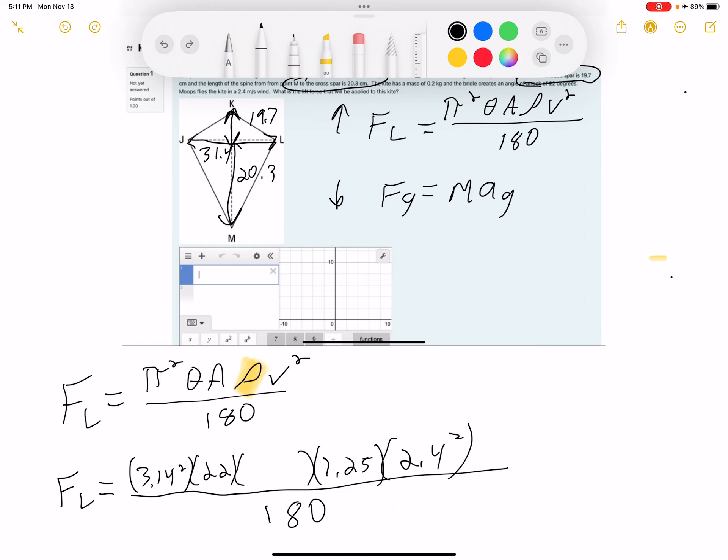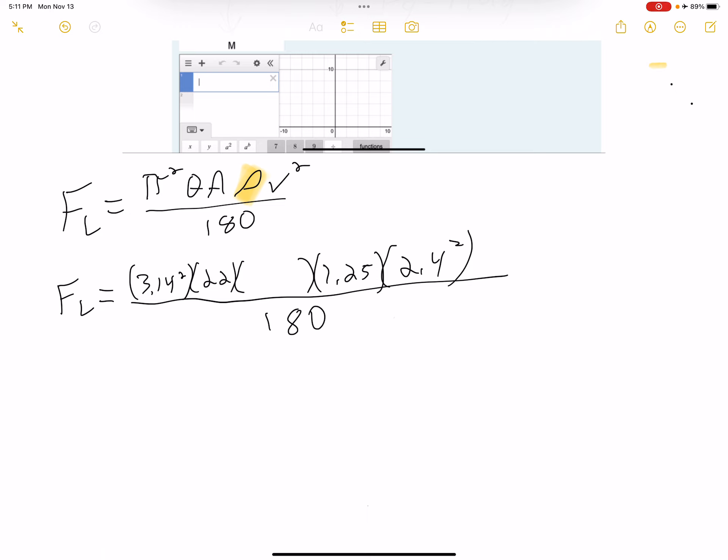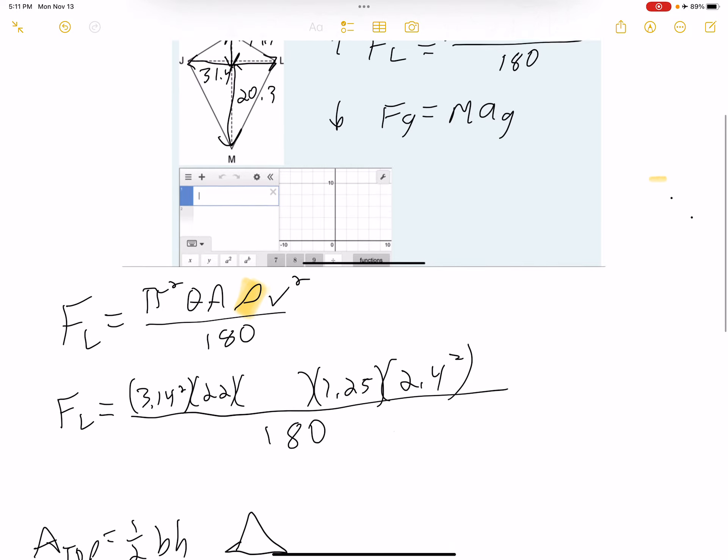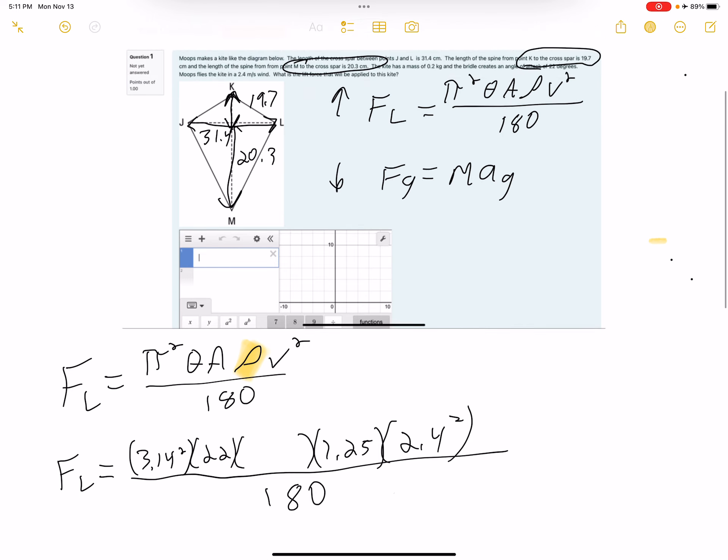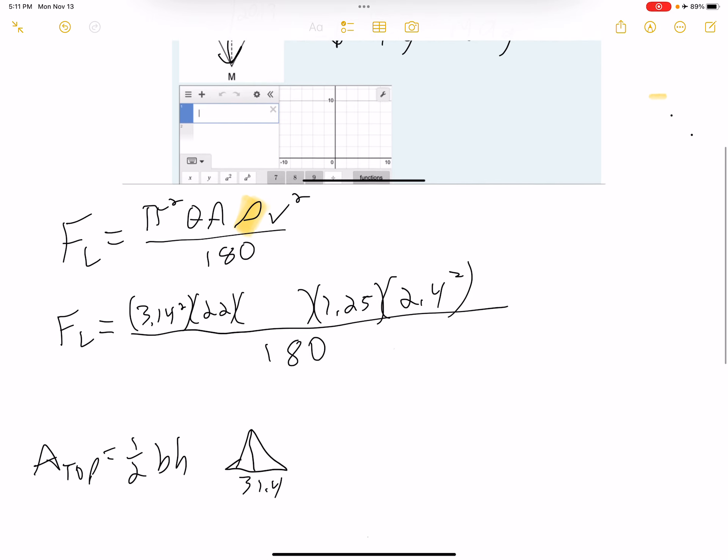So for the top triangle, let's do area top. Area of a triangle is one half base times height. And if we look at our triangle, our triangle has a base of 31.4 and it has a height of 19.7. So 31.4 and 19.7.